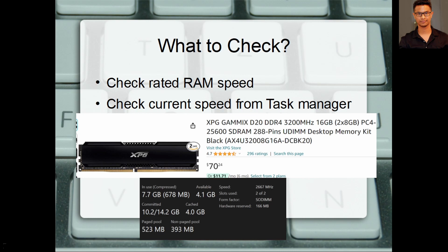For instance, here you can see this is a RAM that's supposed to run at 3200MHz when you turn on the XMP profile and enable the overclock, but it's running at 2600MHz. That way you know your overclock has failed.